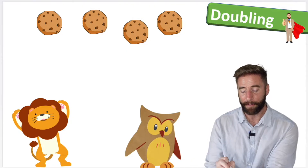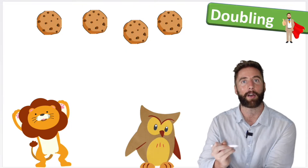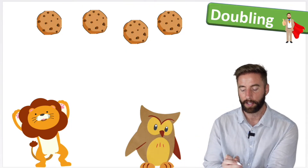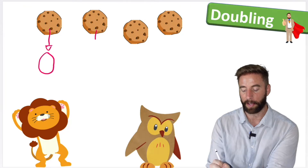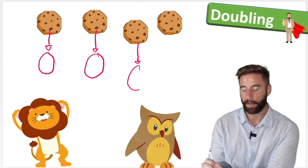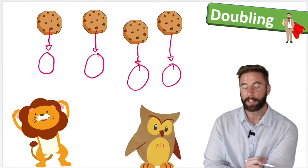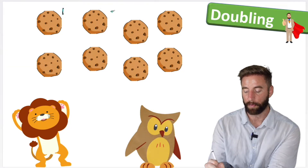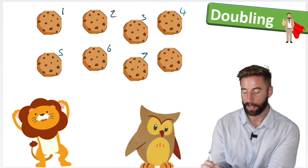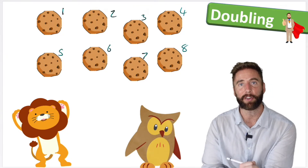So what does double mean? Well, doubling means that for every one cookie we have, we're going to get another cookie. So this cookie is going to make a new cookie. This cookie will have a new cookie. This cookie will have a new cookie. And finally, our last one will also have a new cookie. So we have a total of now eight cookies.